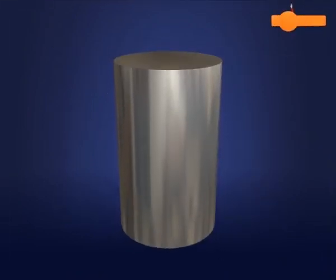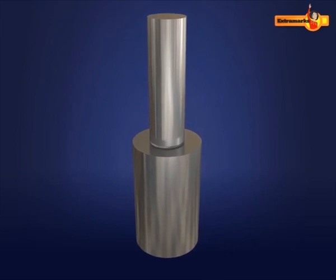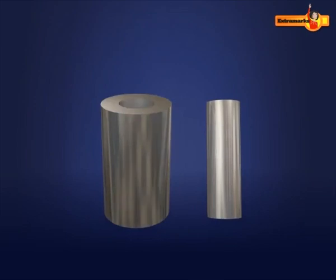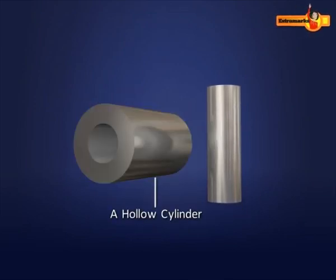You have already studied about the solid cylinder. If we extract out a solid cylinder of lesser radius and same height from a given solid cylinder, then the remaining part is called a hollow cylinder.